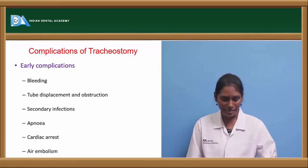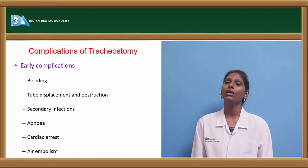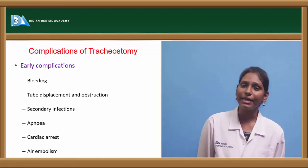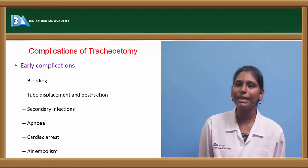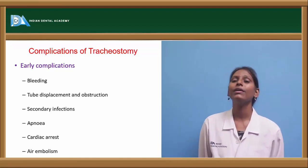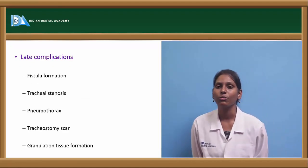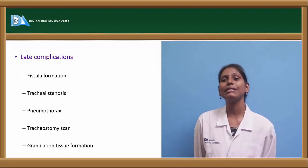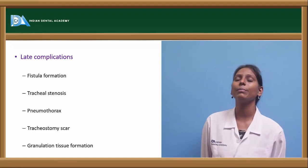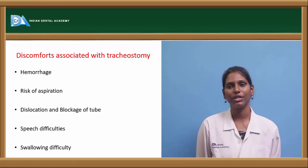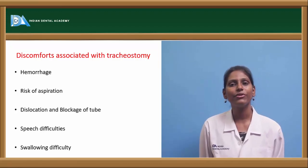Complications of tracheostomy are divided into early and late. Early complications include bleeding, tube displacement or obstruction, secondary infections at the incision site, apnea, cardiac arrest, and air embolism. Late complications include fistula formation, pneumothorax, tracheostomy scar, and granulation tissue formation.